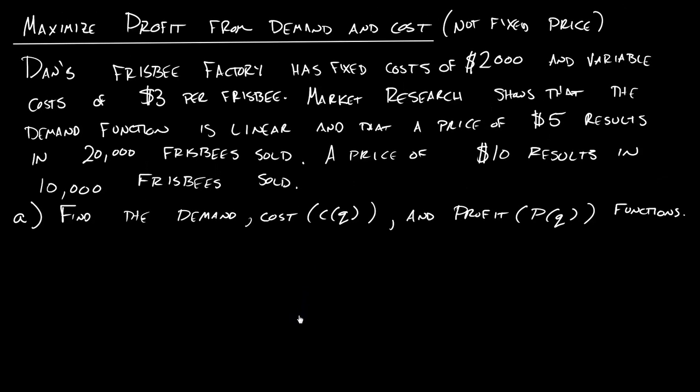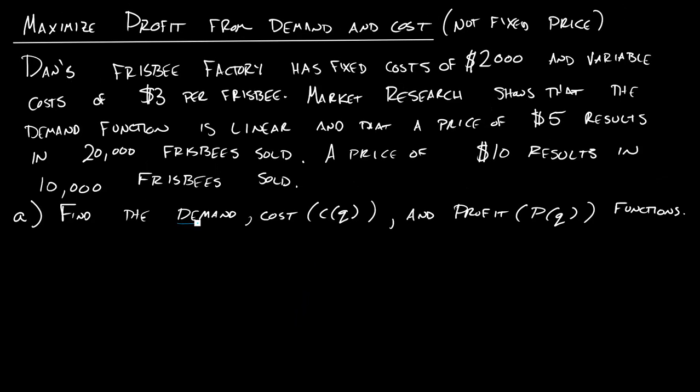So let's start by finding the demand function. Now the demand function is a function that relates quantity and price. And since it's linear, we know it's going to fit in the form Y minus Y zero equals M times X minus X zero. Now, really you could make either one of these P and Q, but the demand function is P in terms of Q. So I'm going to make this P minus P zero. P has to be my output with my demand function. And then we'll have M times Q minus Q zero. So my point from my point slope form could be either of this 5, 20,000 or the 10, 10,000. I will choose the 5, 20,000. So I'll have P minus 5 is equal to M times Q minus 20,000.